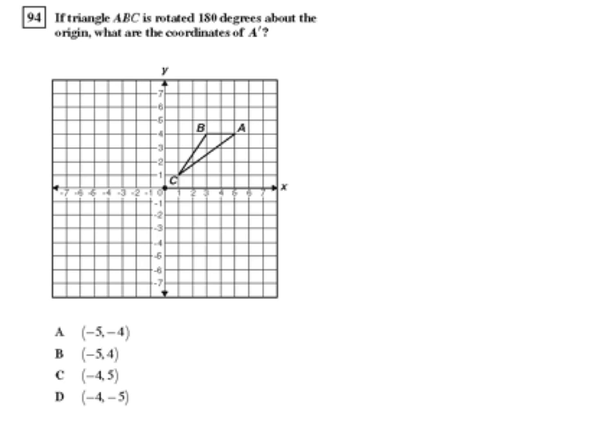So, a rotation of 180 degrees essentially takes your x, y coordinate and maps it to negative x, negative y, or the opposite of x, comma the opposite of y.